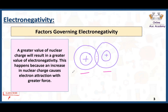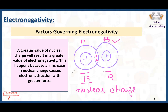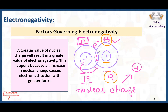Here we have atom A and atom B sharing two electrons in between. Atom A has 15 protons and atom B has 9 protons. More protons means more nuclear charge. Atom A has more nuclear charge, so it has more power to attract these electrons towards itself — atom A is more electronegative. Atom B has fewer protons, less nuclear charge, and less attraction, so atom B is less electronegative. This is how nuclear charge affects electronegativity.